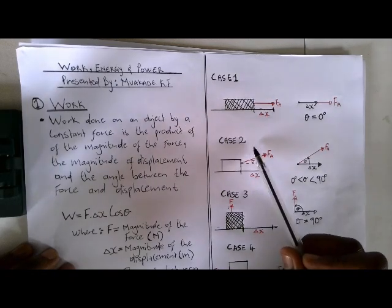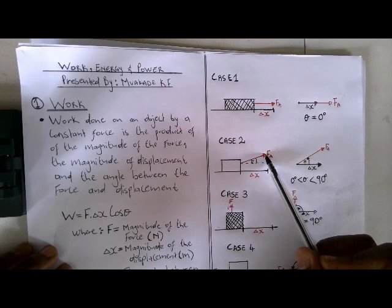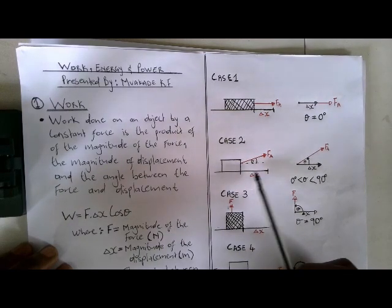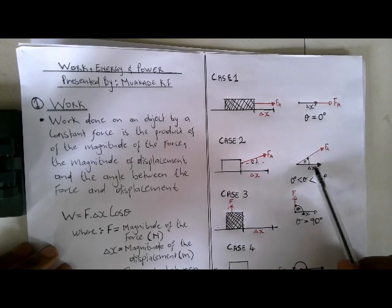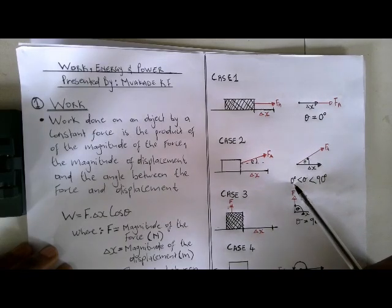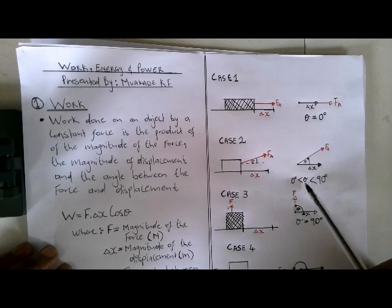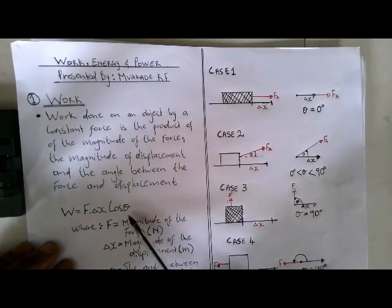Case two: the applied force is not in the same direction as the displacement. The block is moving in one direction but it is pulled at an angle θ. This is represented here — the direction of displacement and the direction of force form an angle θ that is greater than zero but less than 90 degrees. So θ could be 5, 10, 40, 50, 60, 70, or 80 degrees — as long as it is greater than zero but less than 90. This is the angle we put into our formula.